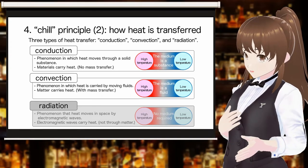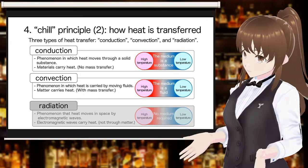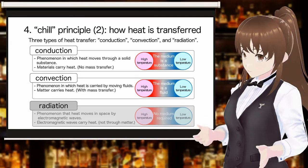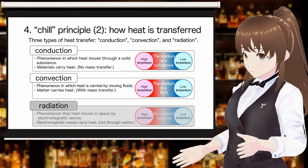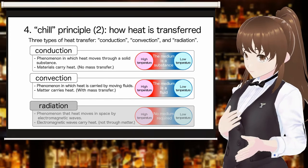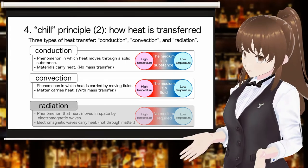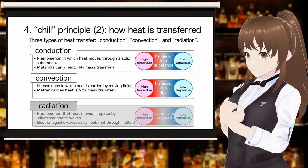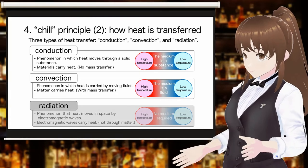Conduction and convection are the ways in which heat is transmitted through materials. What is the difference in heat transfer between conduction and convection? Conduction is the transfer of heat without the movement of matter, while convection is the transfer of heat with the movement of matter. Conduction is the way heat is transferred in solids. Convection is the transfer of heat in fluids such as gases and liquids.